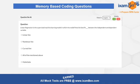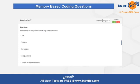Question number 46 is about linear regression in a supervised learning model, where the model finds the best fit line between the independent and dependent variable. You have to identify the kind of trend being followed for this question and then answer it.